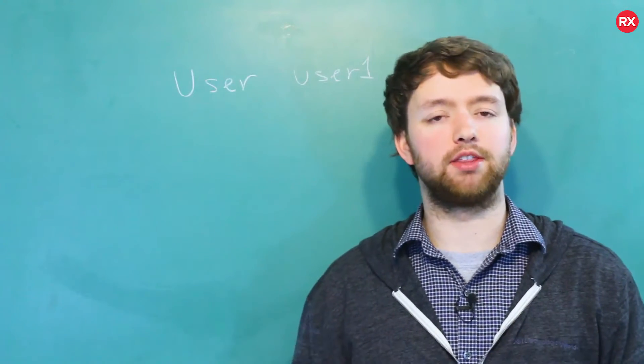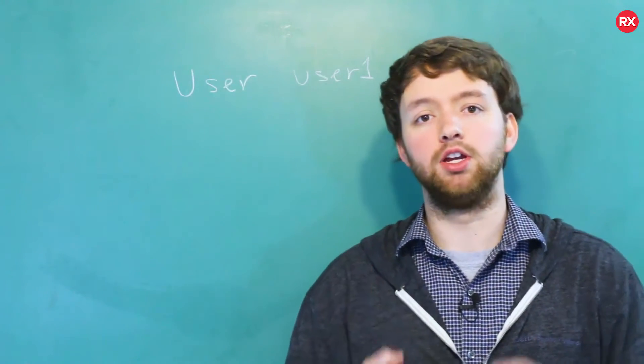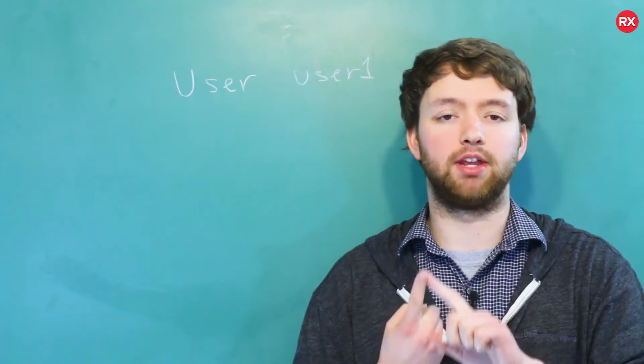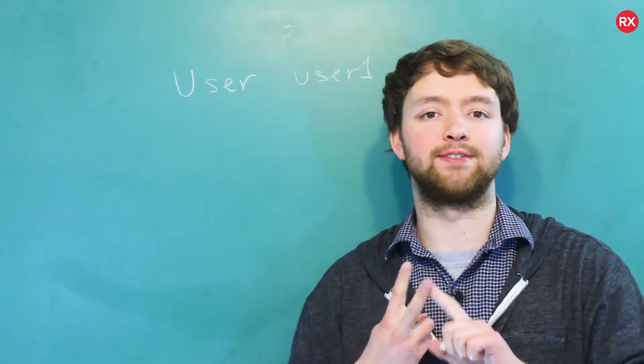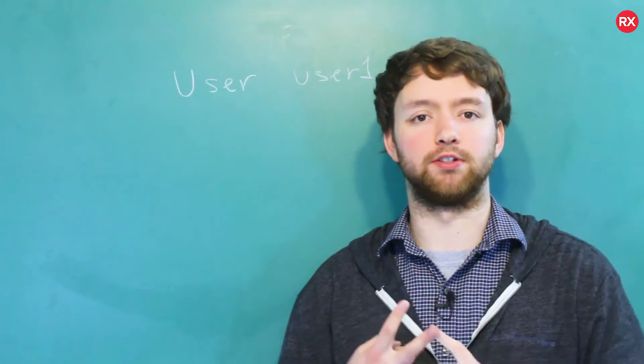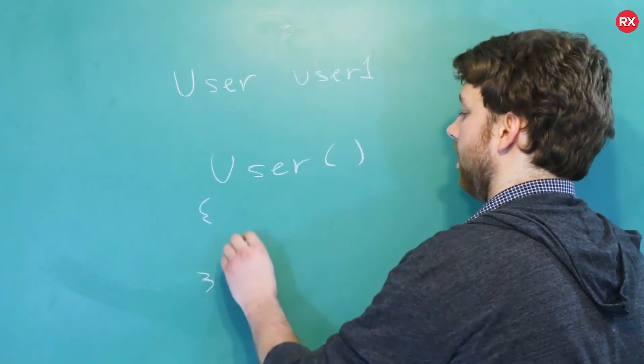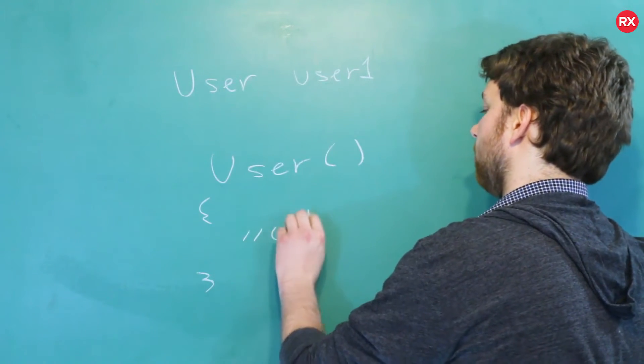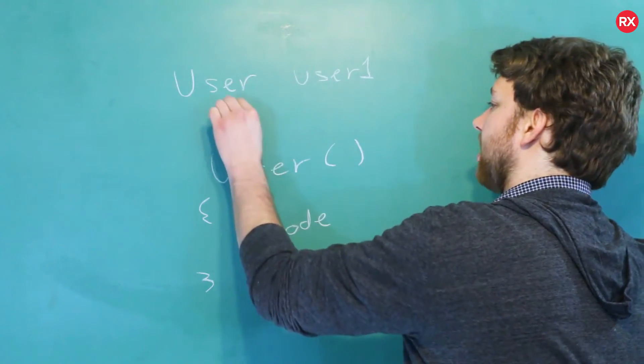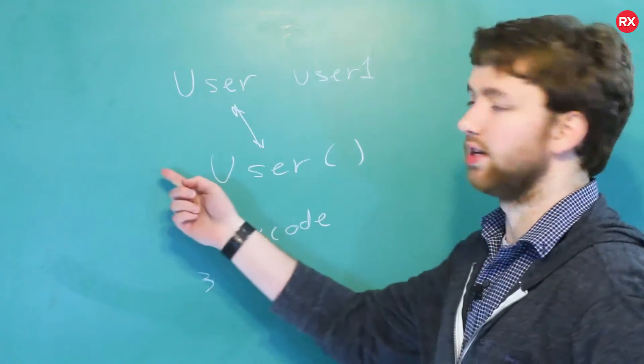So, when you create a constructor, it's just a method, but there's two special things about it. One, is it's the exact same name as the class, and two, it has no return or return type. So, the method would literally look like this, and then the code would go in here. So, note, same exact name here, and we do not prefix it with a return type. That is how you distinguish the constructor from the other methods in the class.